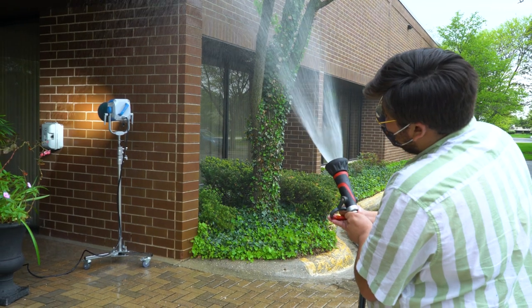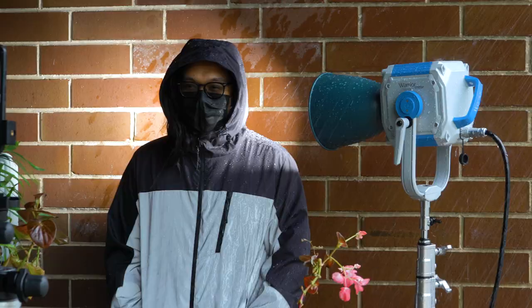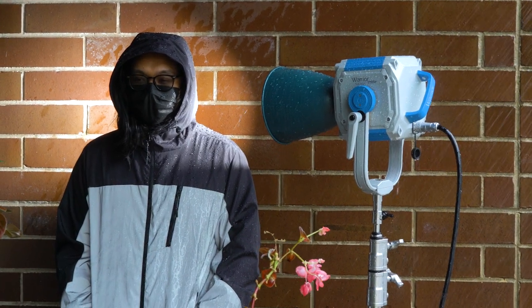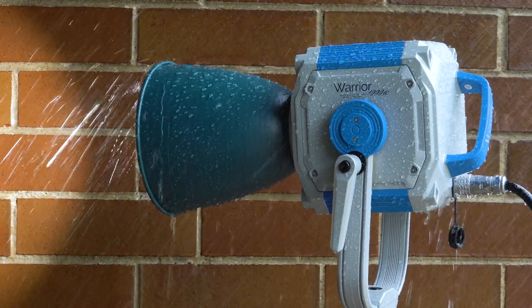We've got a Warrior 1000 XR and we are spraying a hose on it. We've got Alex standing under there with a raincoat. And while Alex did get a little damp, the Warrior 1000 XR did fine.